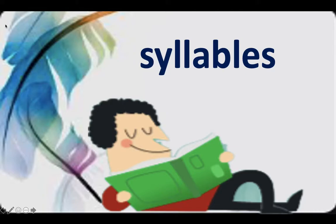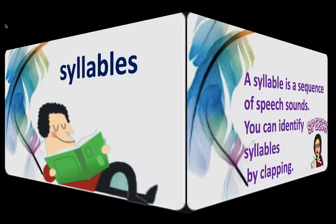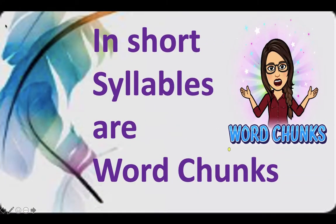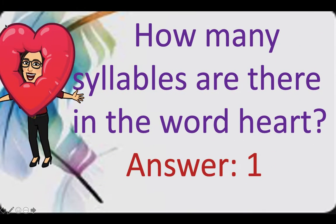Hello students, welcome back to Friend for Learning. Today our lesson is about syllables. A syllable is a sequence of speech sounds. You can identify syllables by clapping — they are short word chunks that make a beat as you pronounce the words, and it's fun and interactive. Let's get started.